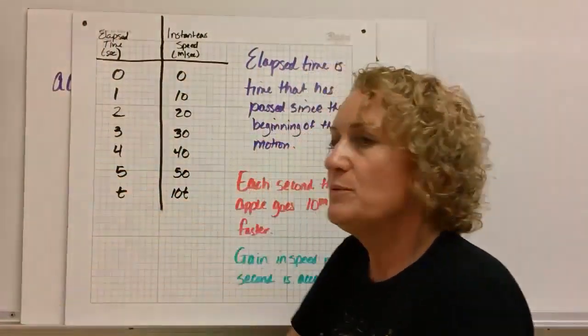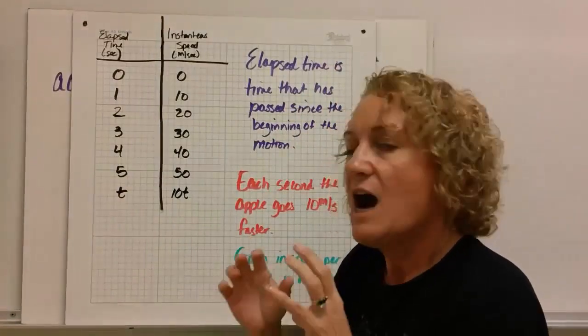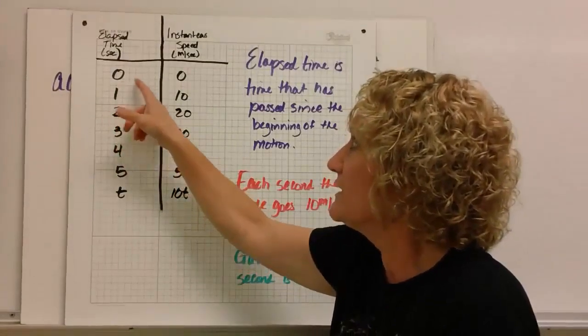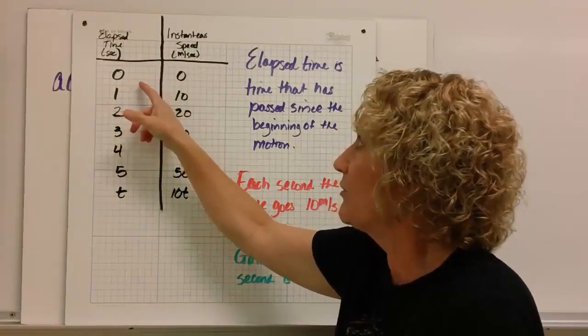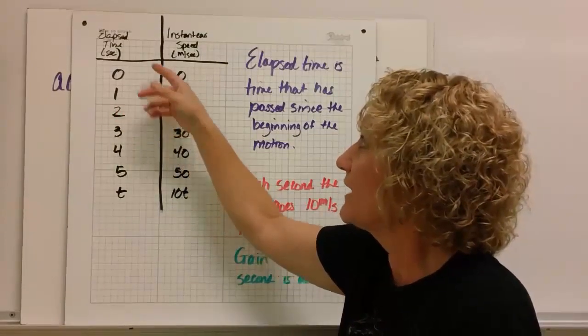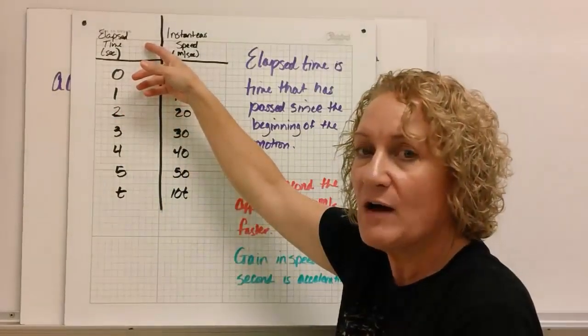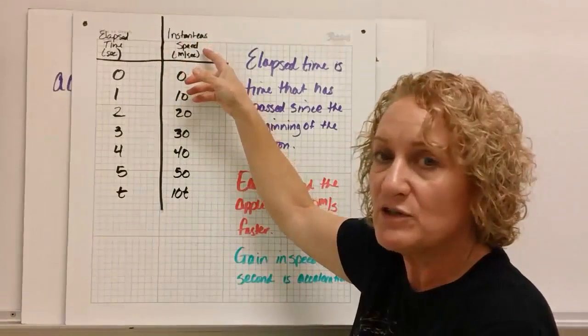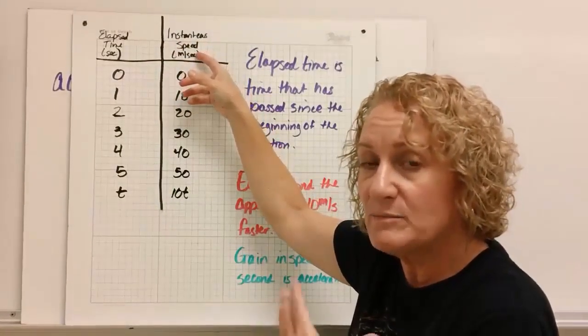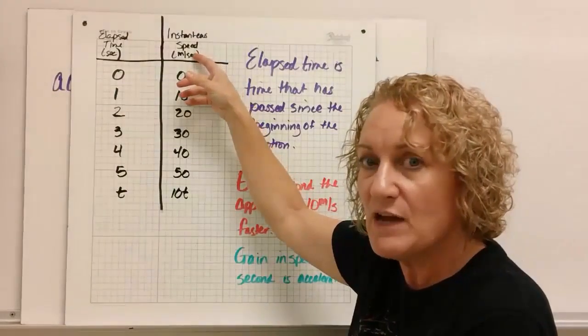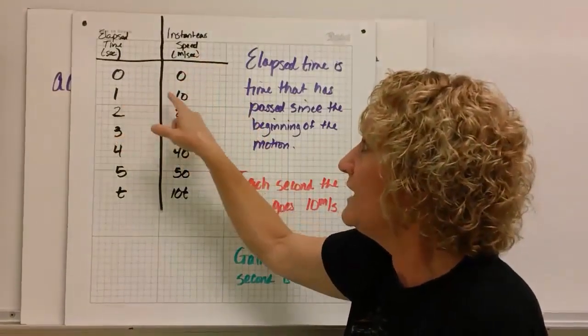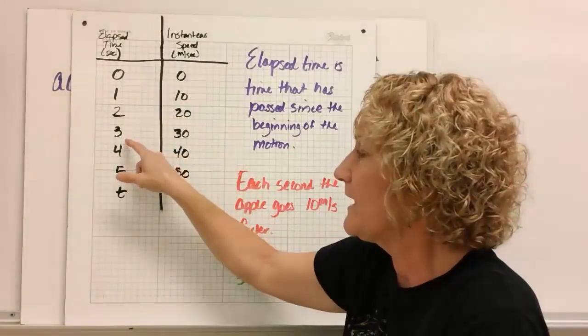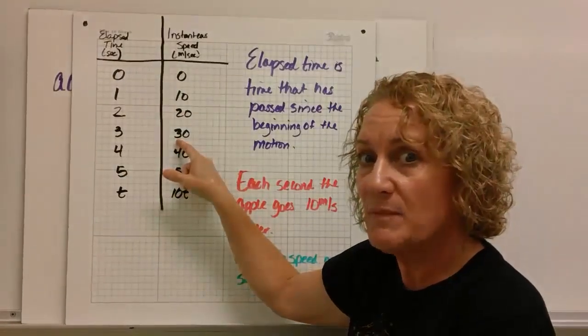Let's pretend like we could put a speedometer on that apple and every second we're going to measure how fast it's going. When it's still in the tree or in the hot air balloon, zero time, zero seconds. Elapsed time is how much time has passed since it started moving. Instantaneous speed is the speed at a specific second, at an instant in time, an immeasurably small period of time. After one second, it's going 10 meters per second. After two seconds, 20 meters per second. After three seconds, 30 meters per second. Are you seeing a pattern here?